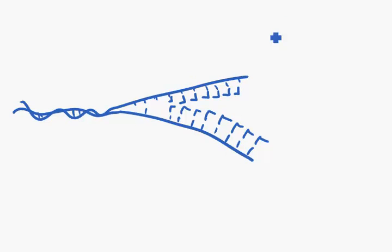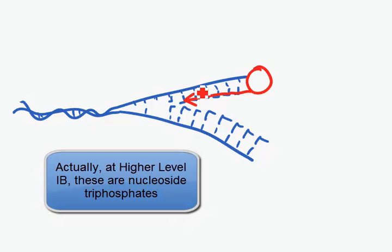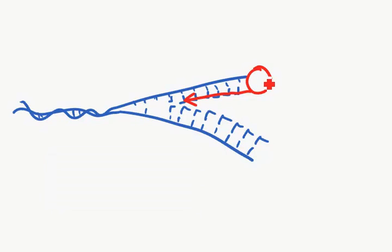So we end up with something like this. Now standard level, your enzyme DNA polymerase attaches. Here it is, and it works its way along here, sticking everything together. For a higher level IB, there'll be an RNA primer put down, which is where our DNA polymerase 3 attaches and moves along.